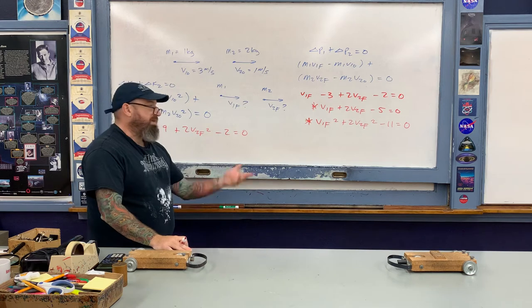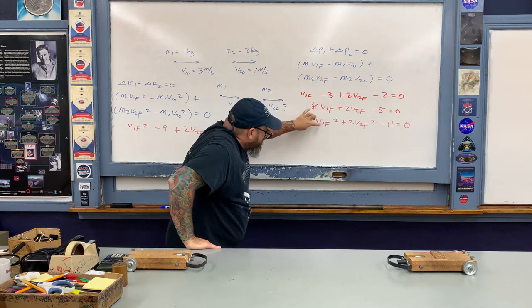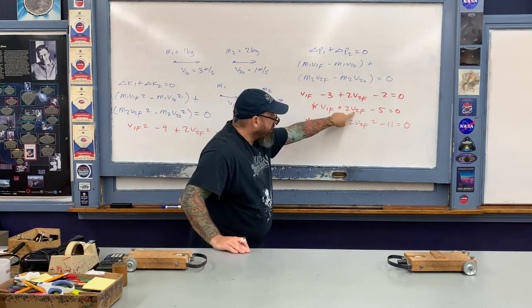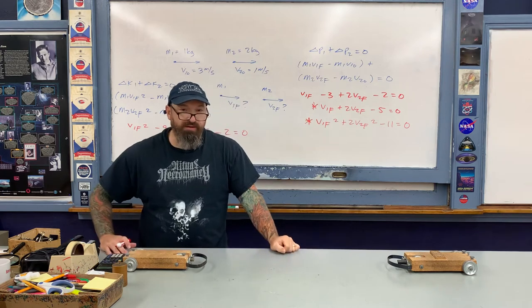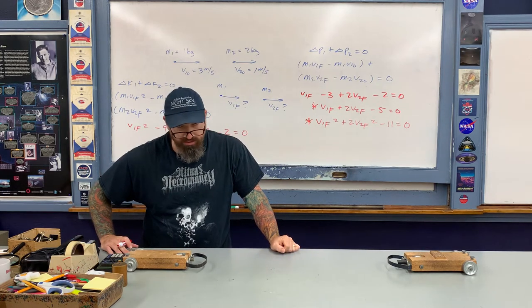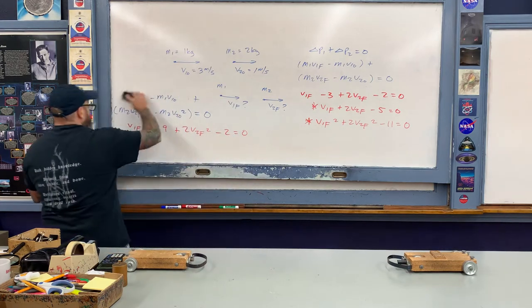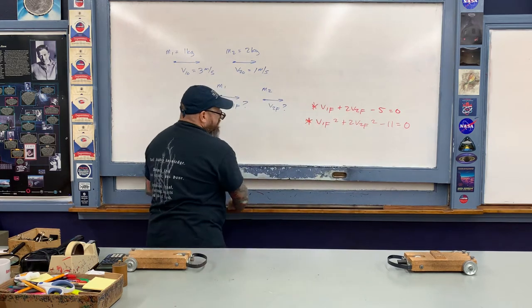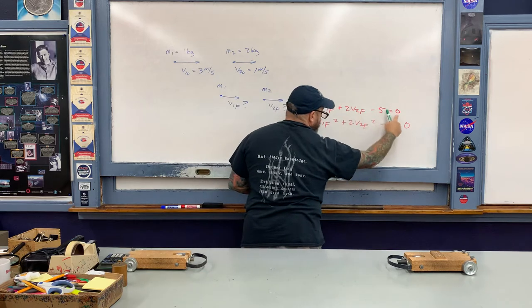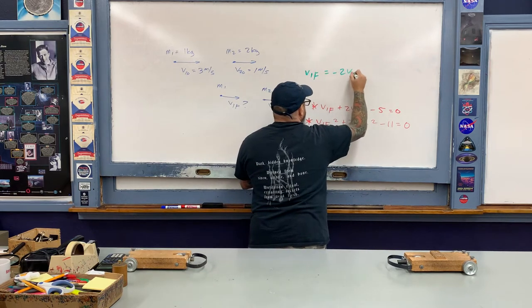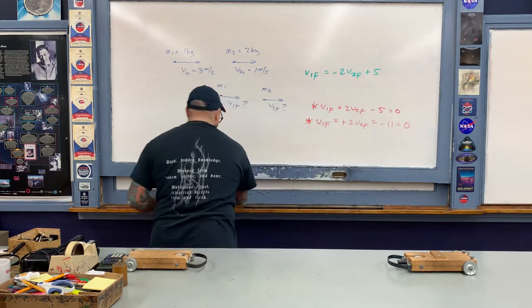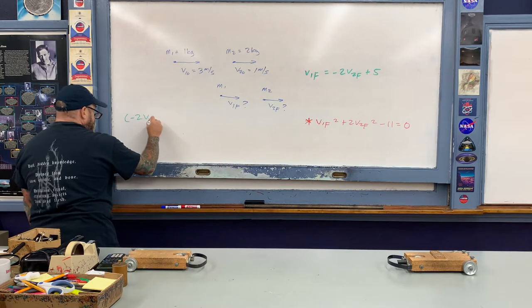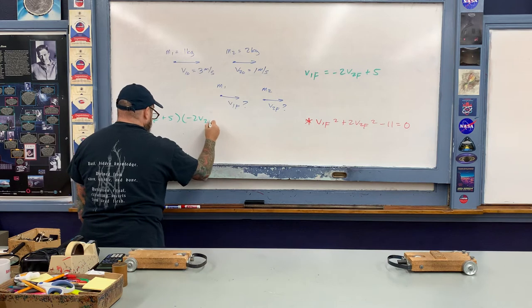At this step, take the momentum expression and solve it for v1-final, then substitute into the kinetic energy equation. That will yield a quadratic in v2-final as the unknown. Solving for v2-final first would introduce fractions, which I want to avoid to keep the algebra as easy as possible. So I take the momentum equation, move terms to the other side to isolate v1-final, then substitute that expression — squaring it — into the kinetic energy equation.